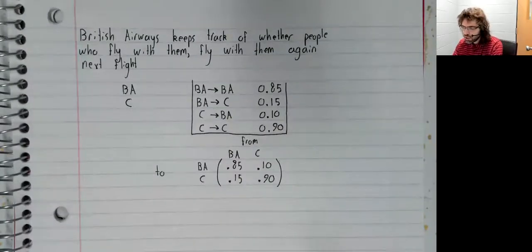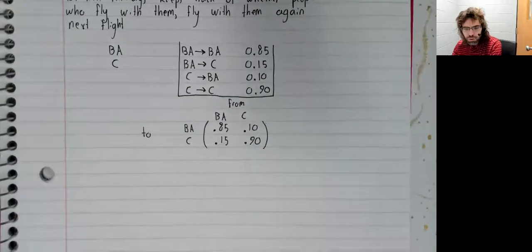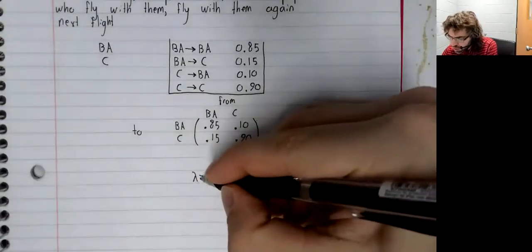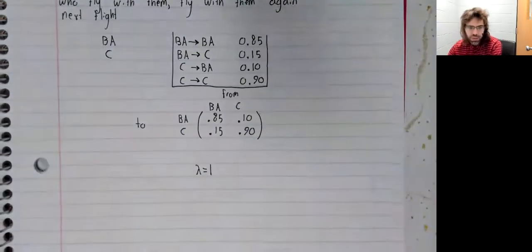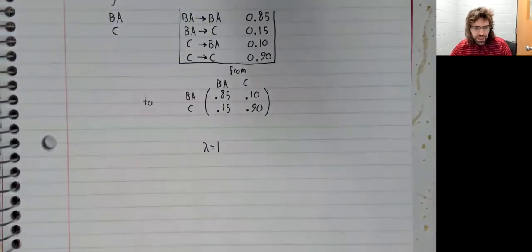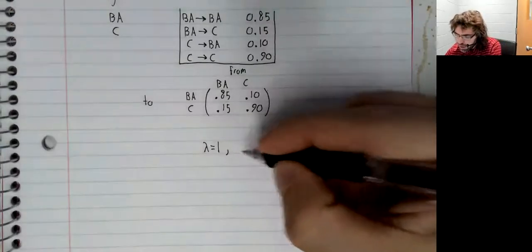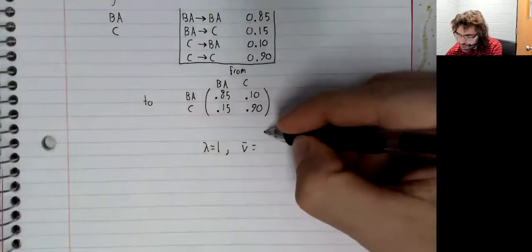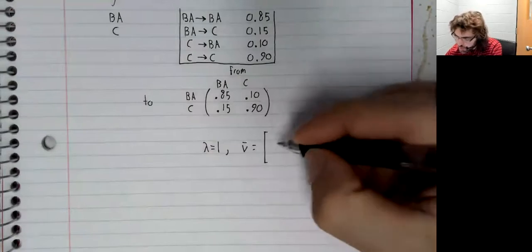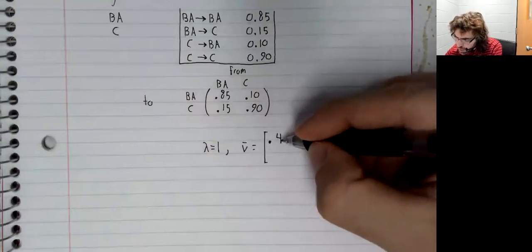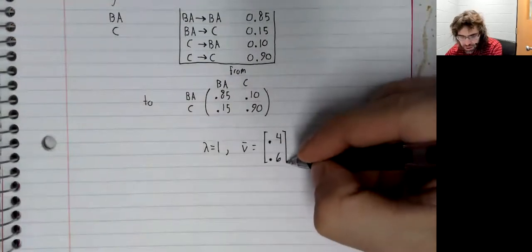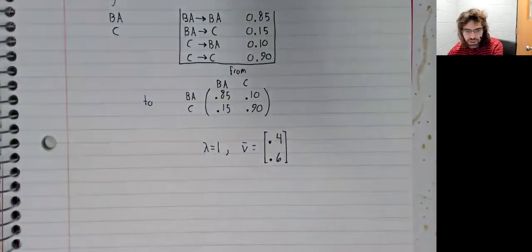This matrix has two eigenvalues. The eigenvalue we're going to be interested in is lambda equals one. And any eigenvalue has infinitely many eigenvectors.